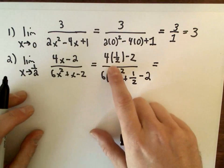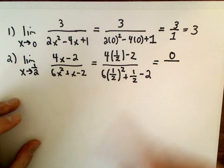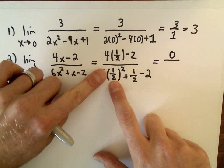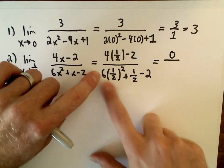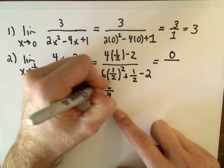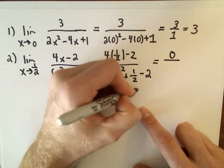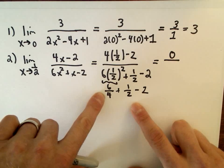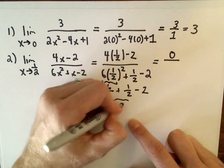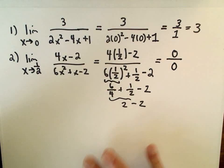Well, let's see. 4 times 1/2, that's 2 minus 2. I get 0 in the numerator. That's fine. The only thing I'm worried about is getting 0 in the denominator. Well, 1/2 squared, that's 1/2 times 1/2, which is 1/4. 6 times 1/4 will be 6 over 4, or equivalently 3/2, plus 1/2 minus 2. Well, 6 over 4 is 3/2, plus 1/2 will be 4/2, which will give us 2. So this is really 2 minus 2.